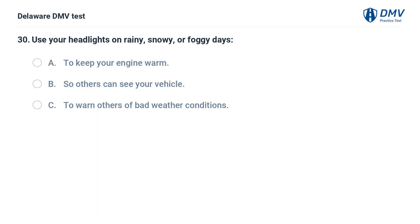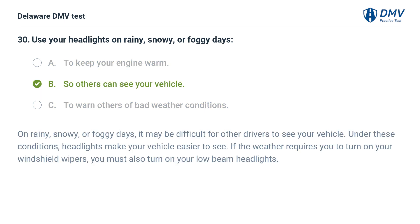Use your headlights on rainy, snowy, or foggy days: A. To keep your engine warm. B. So others can see your vehicle. C. To warn others of bad weather conditions. Answer: B. On rainy, snowy, or foggy days, it may be difficult for other drivers to see your vehicle. Under these conditions, headlights make your vehicle easier to see. If the weather requires you to turn on your windshield wipers, you must also turn on your low beam headlights.